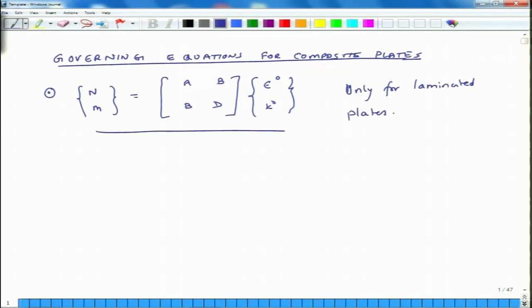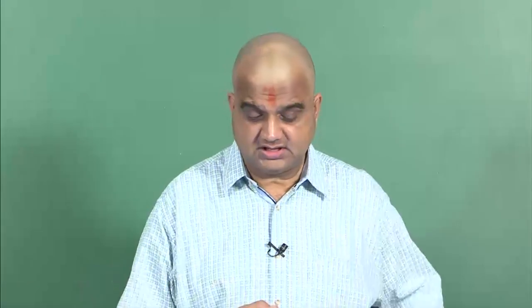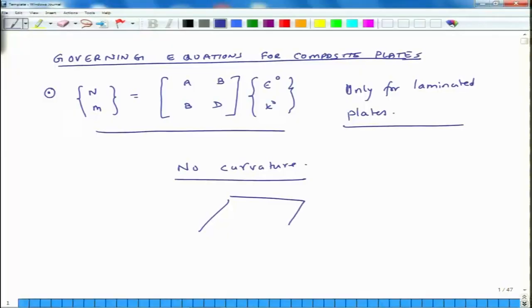What is a plate? A plate is a stack-up of composite materials which, when it is not loaded, has no curvature. These equations may not be necessarily true for curved systems, for shells, for cylinders, for spheres and things like that. But if we have a plate — it can be of any shape — as long as the curvature of the plate is not there, we call it a plate. From a structural standpoint, these equations are valid only if we are considering plates.